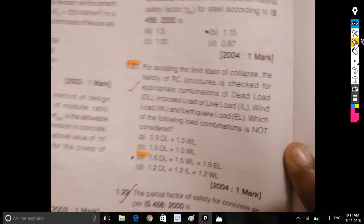For avoiding a limit state collapse, the safety of the reinforced concrete structure is checked for appropriate combinations of dead load, live load, imposed load, and wind load.